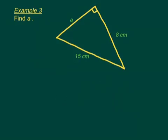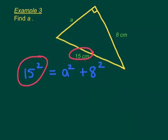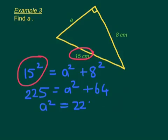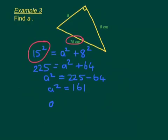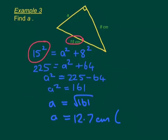So we've got 15 squared equals A squared plus 8 squared, because 15 is the hypotenuse, so I have to keep the hypotenuse by itself. So 15 squared is 225, giving us A squared plus 64. Rearranging, A squared is equal to 225 minus 64, so A squared is equal to 161. Then A is the square root of 161, which is 12.7 centimeters to three significant figures.